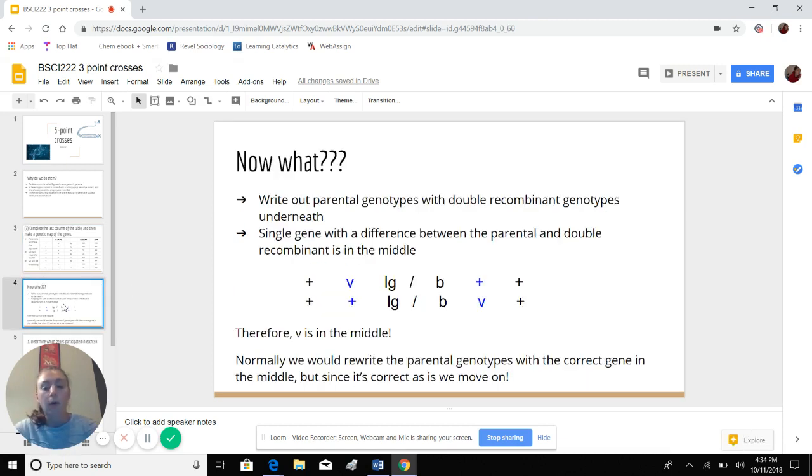So we have that, now what do we do? The next step is to figure out which gene is in the middle. We do this by writing out the parental genotypes with the double recombinant genotypes underneath. So these first two rows here, the plus VLG and B++ are the two parental genotypes, and then the two underneath are the two double recombinant genotypes. The way we determine which gene is in the middle is the single gene with a difference between the parental and double recombinant is in the middle.